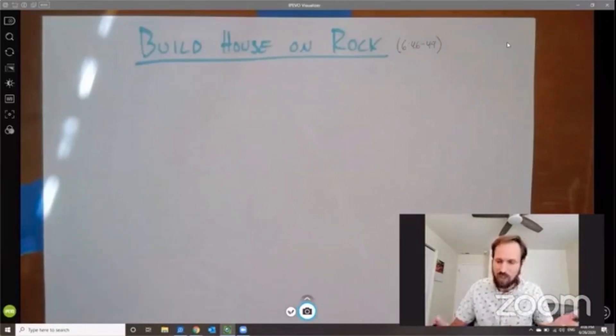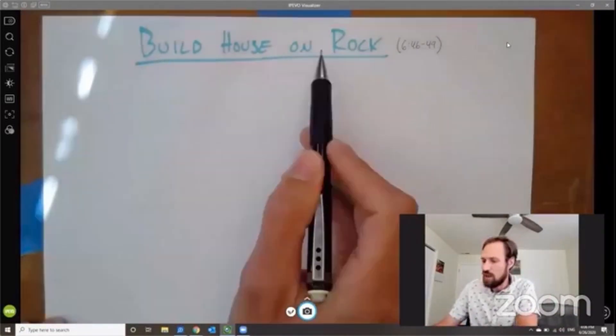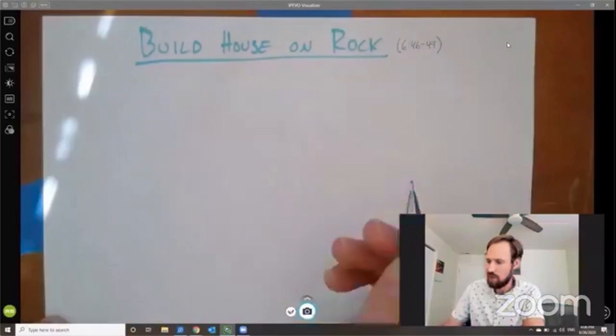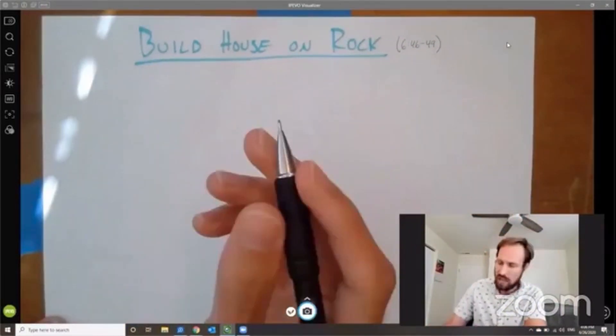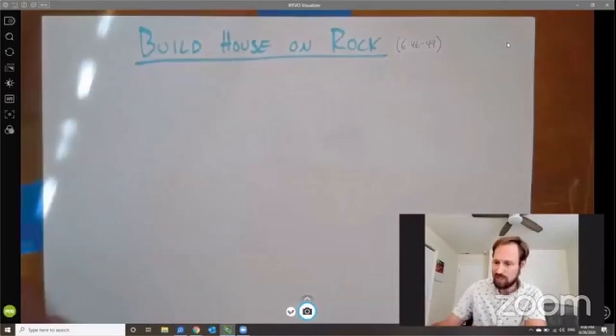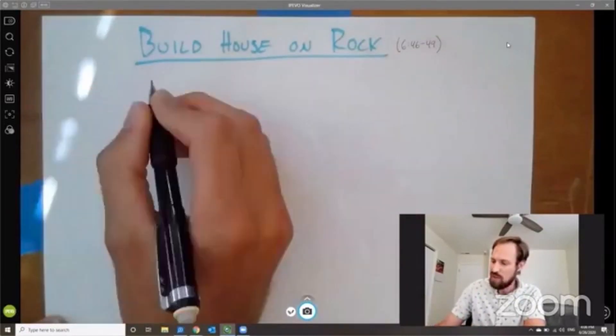So a little bit of background and an introduction to the Sermon on the Mount, which will help us build up towards this conclusion here, Jesus' conclusion, the call to build one's house on the rock. So a couple things you need to know. Two things by way of introduction to the Sermon on the Mount. One, just setting up the context. What has happened before this point in the story?